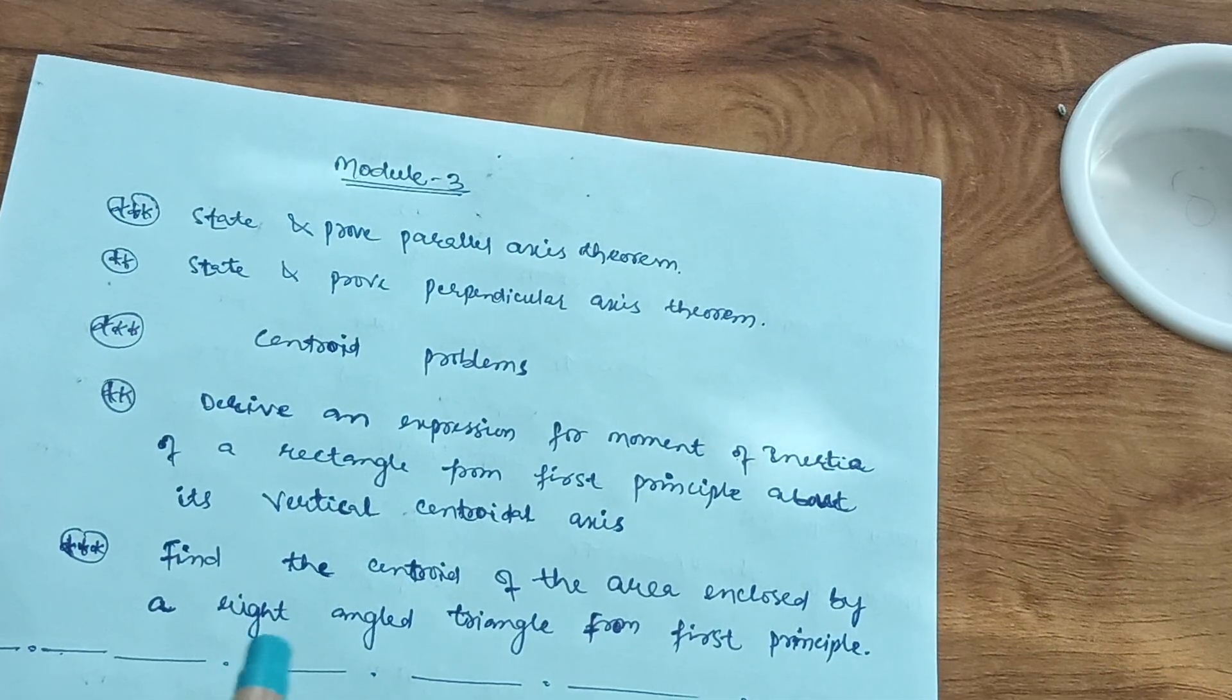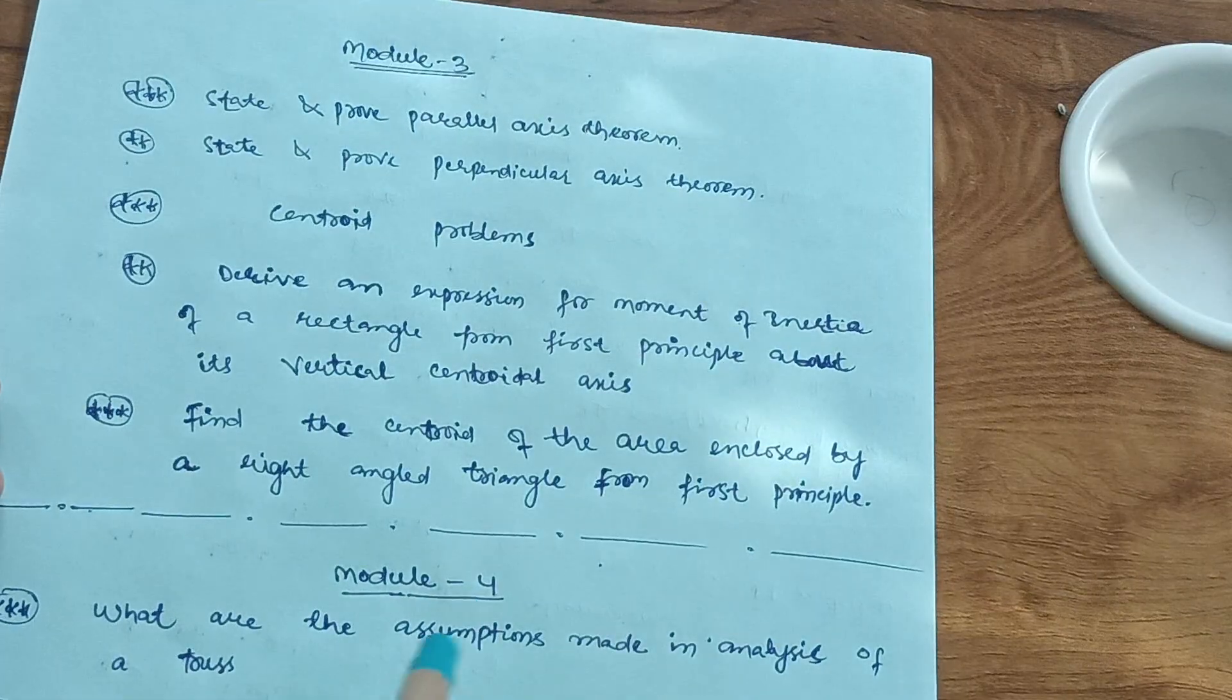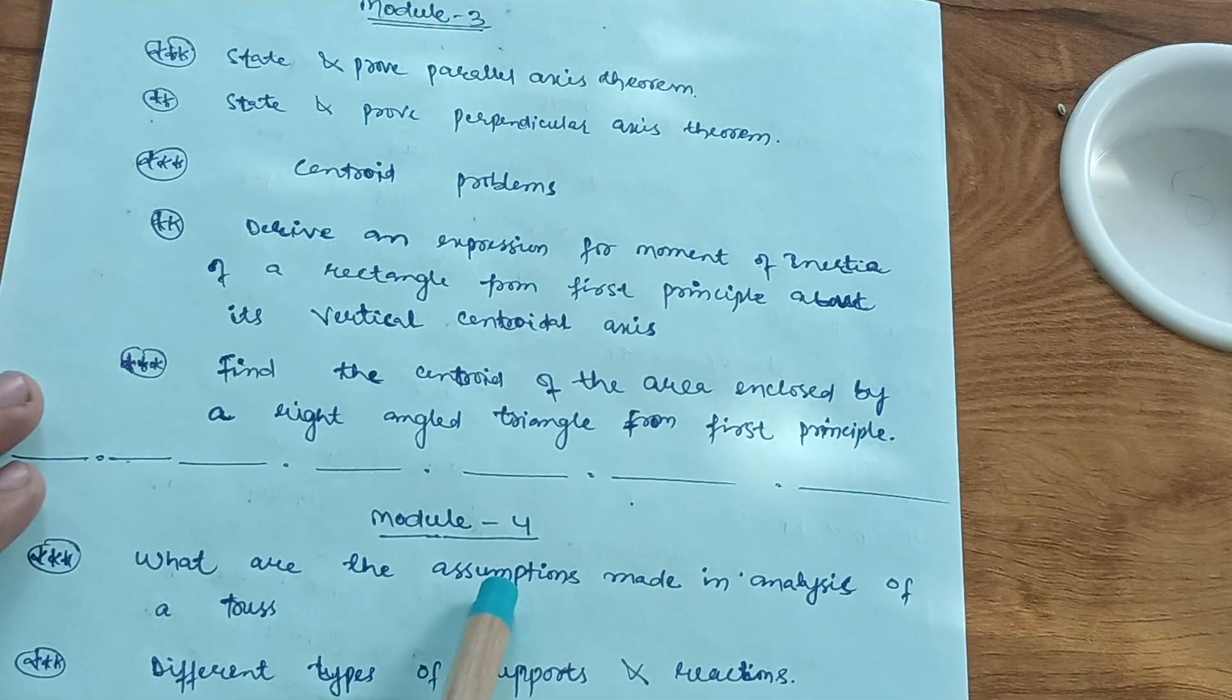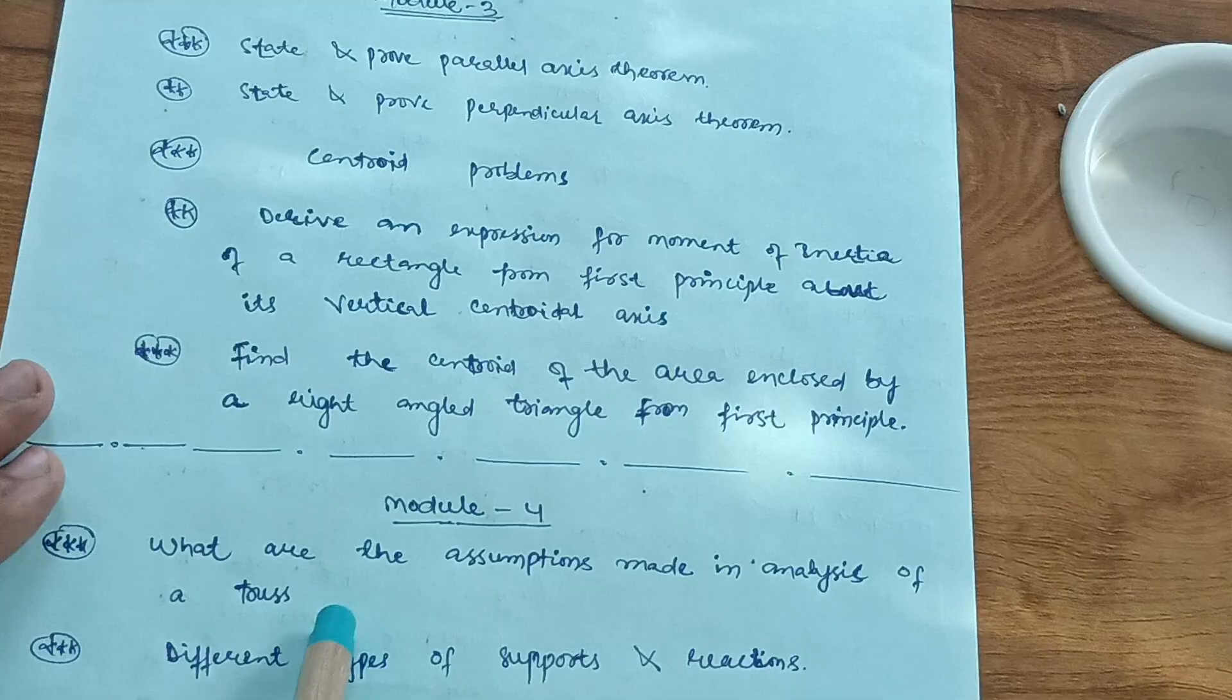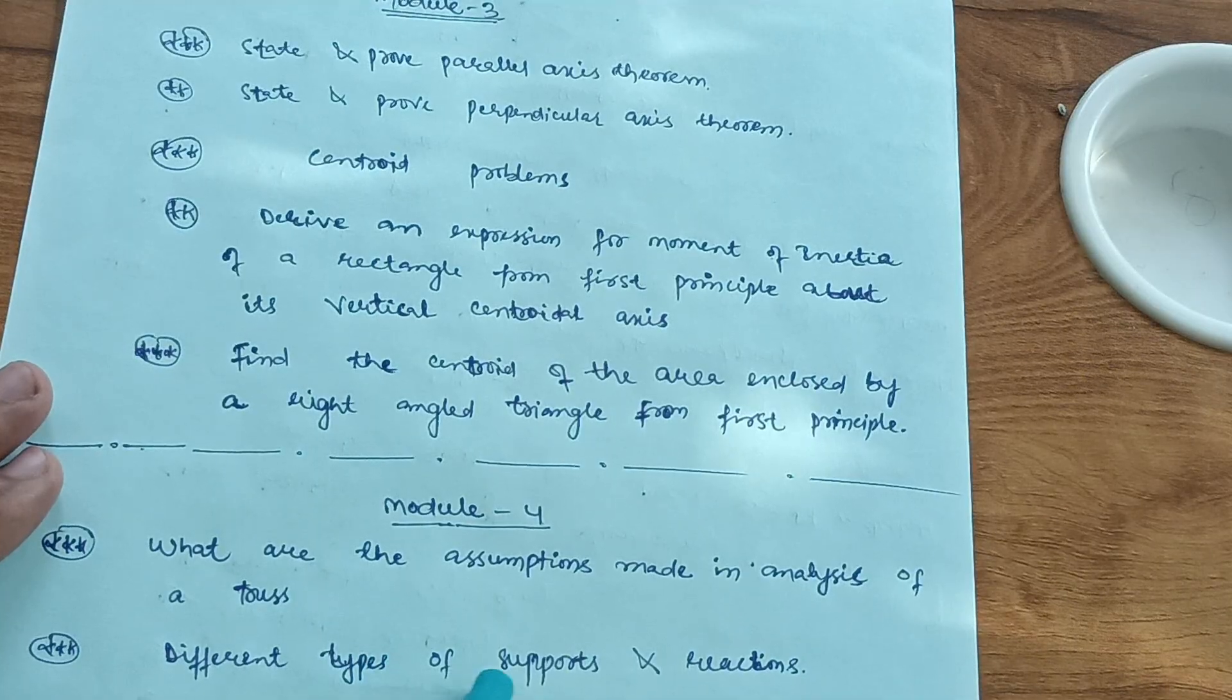You have to focus on centroid problems so that you will get 20 marks from this module. This much content is enough for module third. Then module fourth comes up in which you have to cover what are the assumptions made in the analysis of a truss, and different types of supports and reactions.